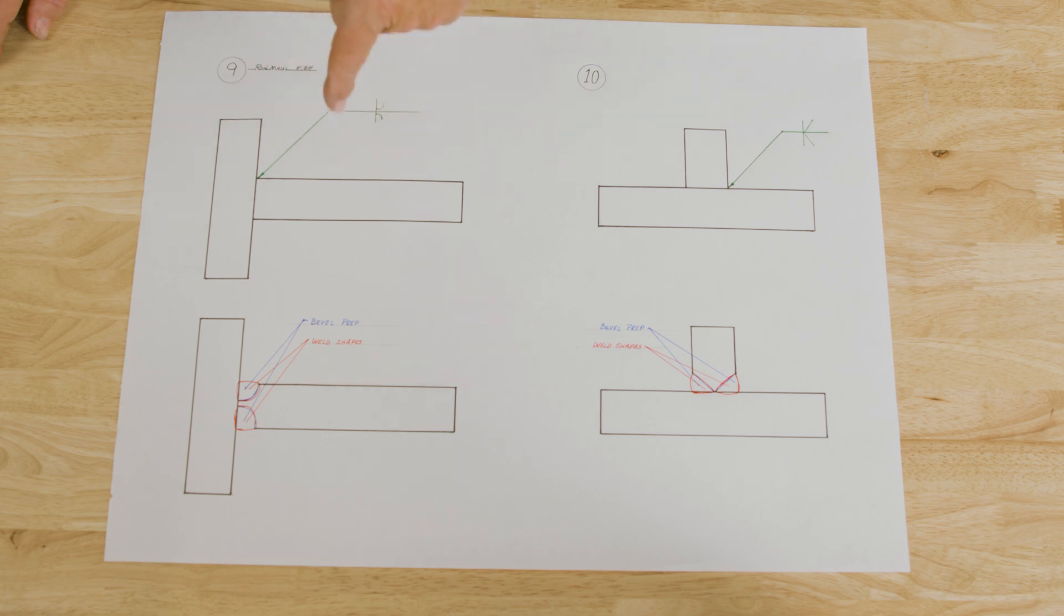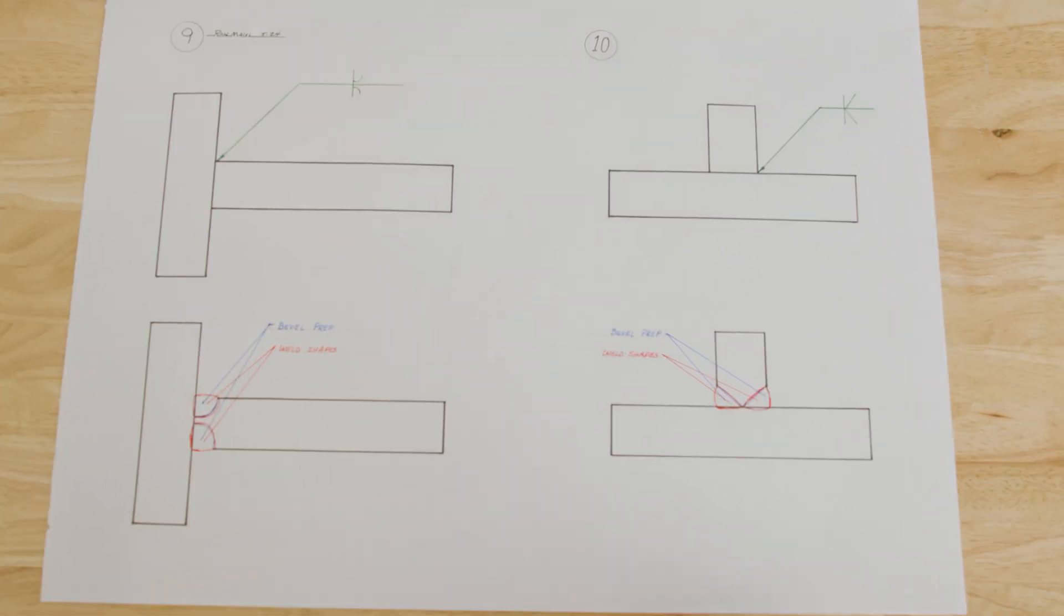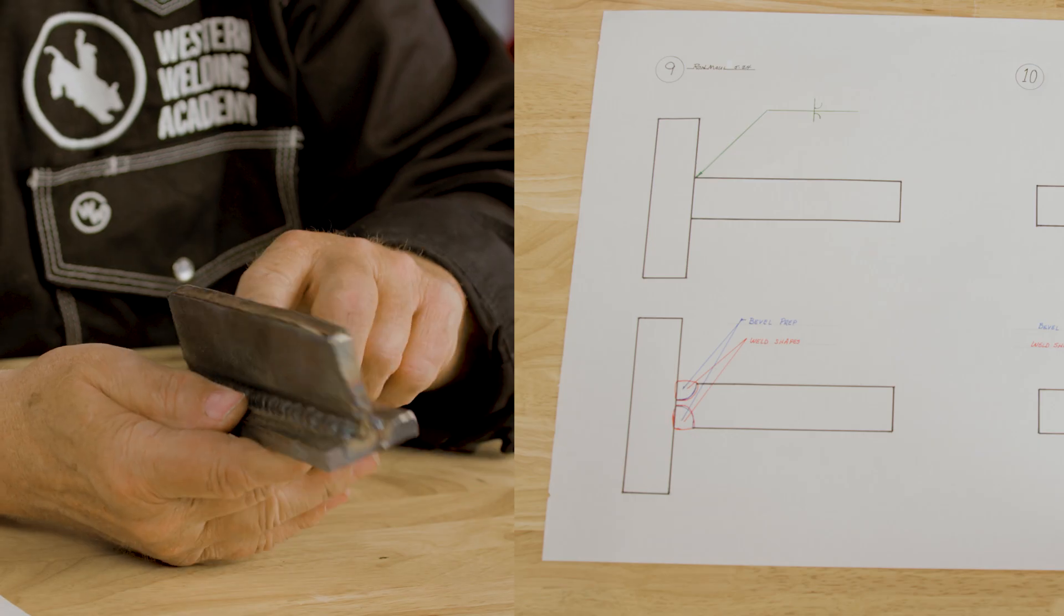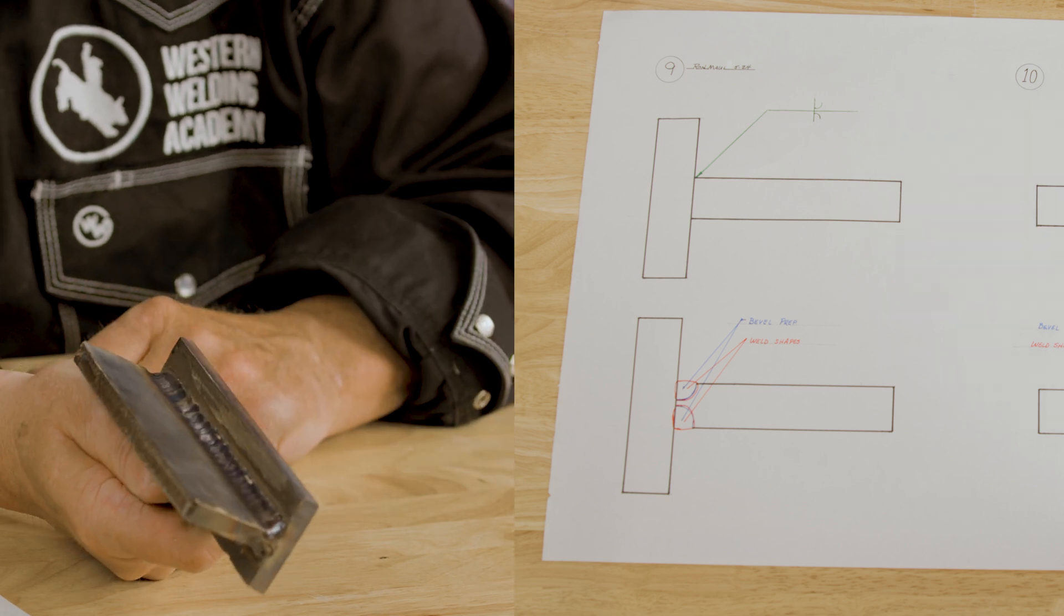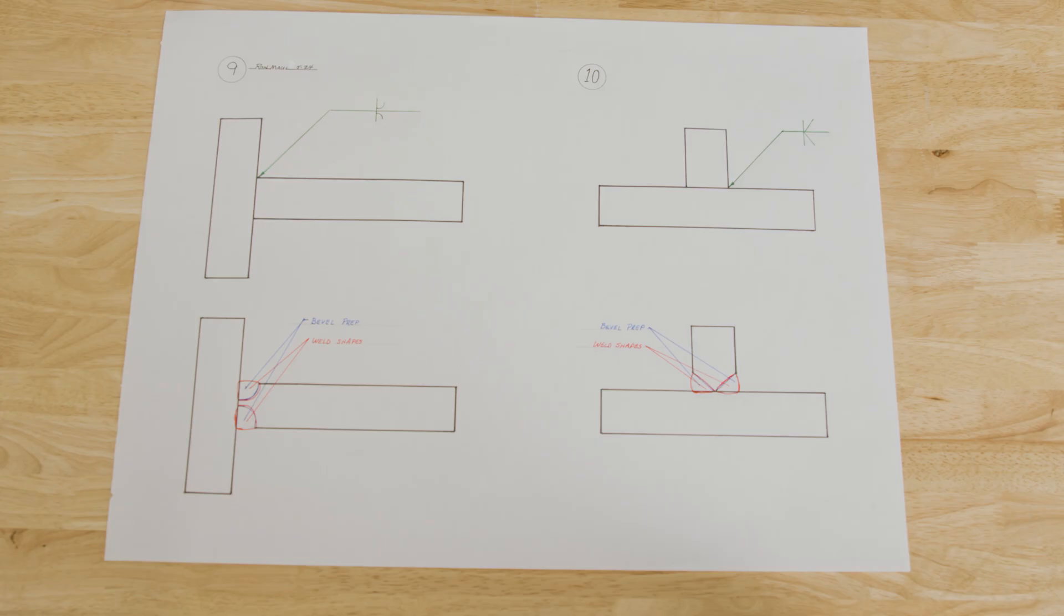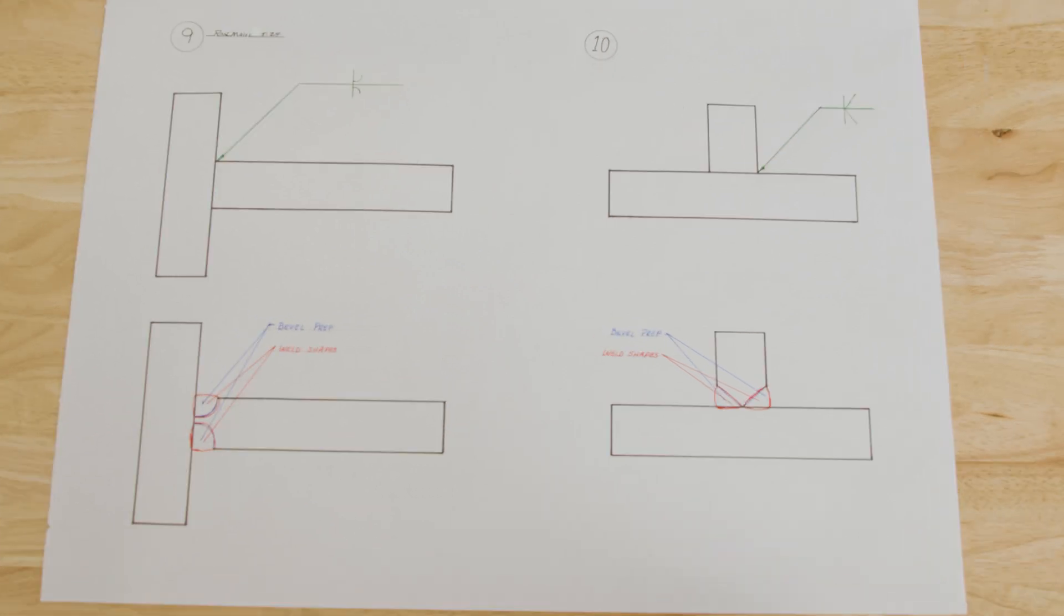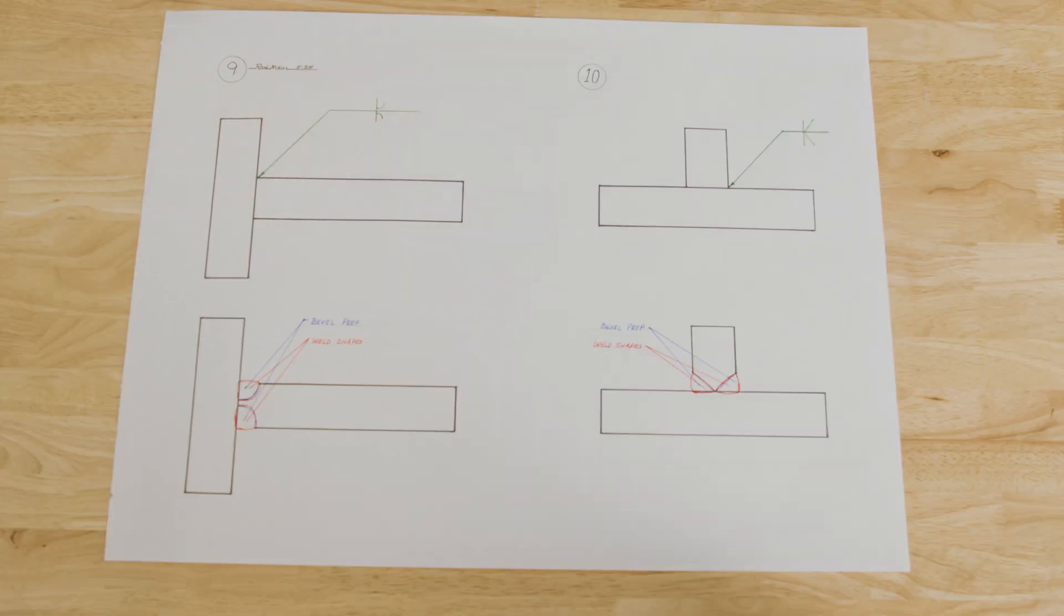So you either machine it or do your best to make it, but you have to prep it into a half round both ways and leave just a little bit in between, not much. So you get near full penetration on that weld. And most of the time when they're doing a bevel, it's because they don't want a full fillet that's going to be in the way of something else.